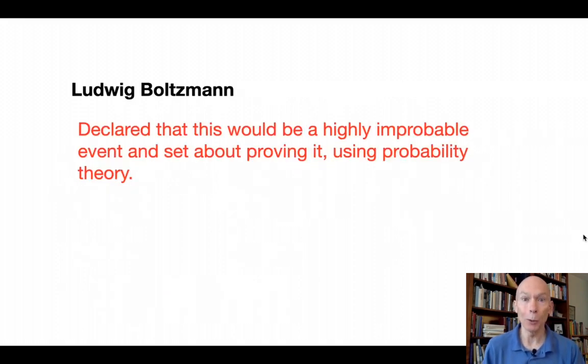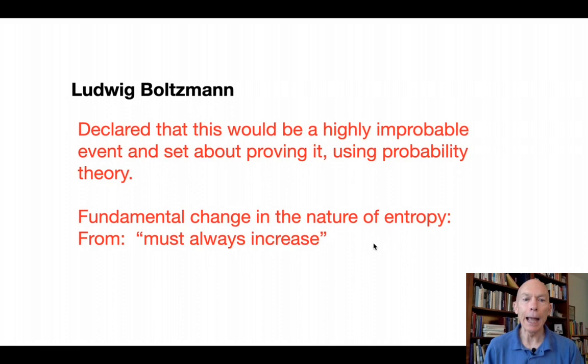Wow, so Ludwig Boltzmann looked at this and said, you know, you're right, but he declared that this would be a highly improbable event and set about proving it. His mathematics were huge here. Again, I'm not going to go into it, but he brought probability to address the mathematics, probability theory based on permutations. And what he ended up with was a fundamental change in the nature of entropy from must always increase to almost certain to increase. Well, almost certain does not mean 100% certain. Thus entered entropy into the world of probability.